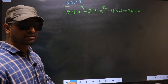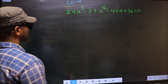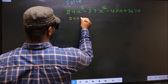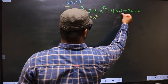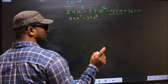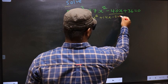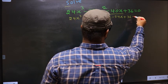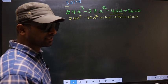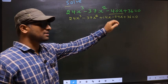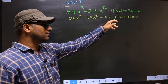For that we have to change the x term. We have 24x³ minus 37x², and in place of minus 40x, I write plus 14x minus 54x, plus 36 equal to 0. In place of minus 40x, I have written plus 14x minus 54x.